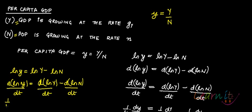What is D log of small y? It is 1 upon Y, D Y by DT, minus 1 upon N, D N by DT.